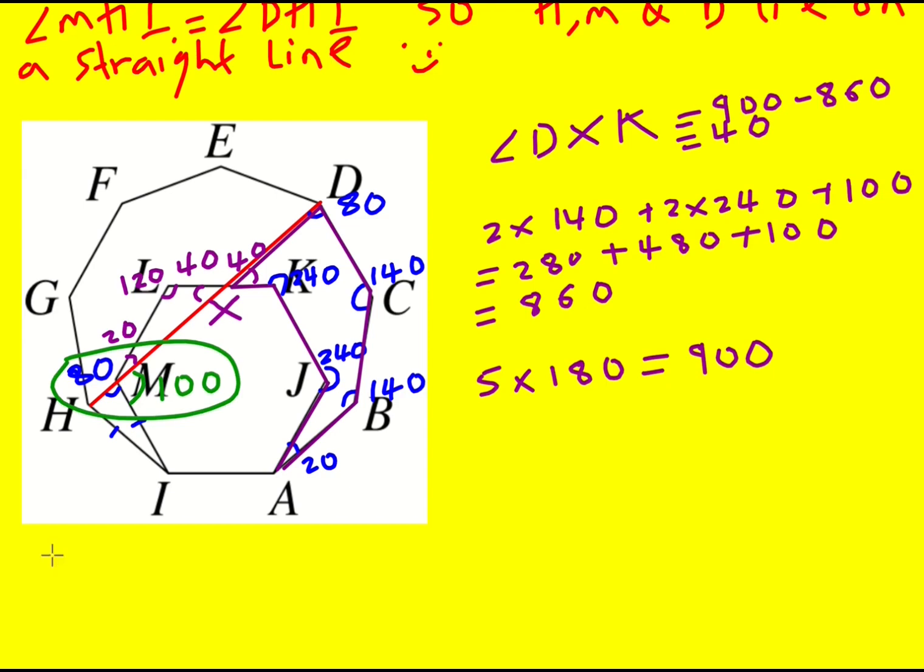Okay, I've got 80 and I've got 100. So therefore, angle HMD or DMH, however you want to say it, is equal to 180. So H, M, D, lie on a straight line.